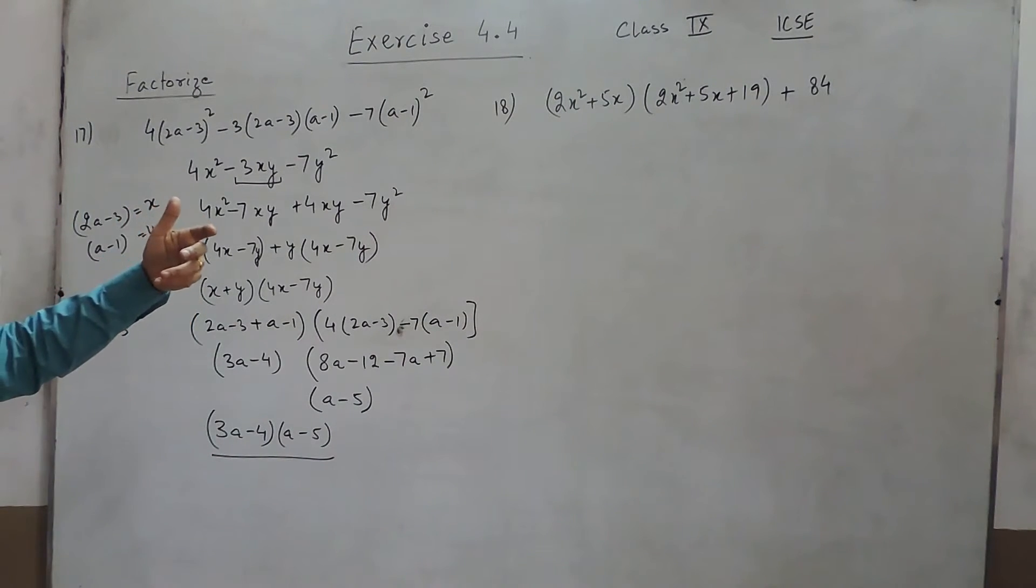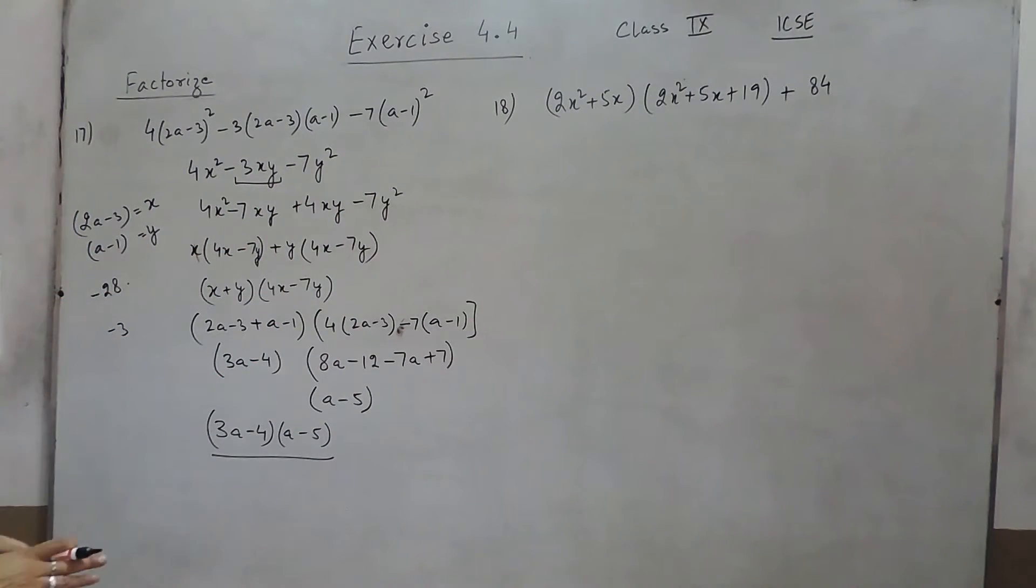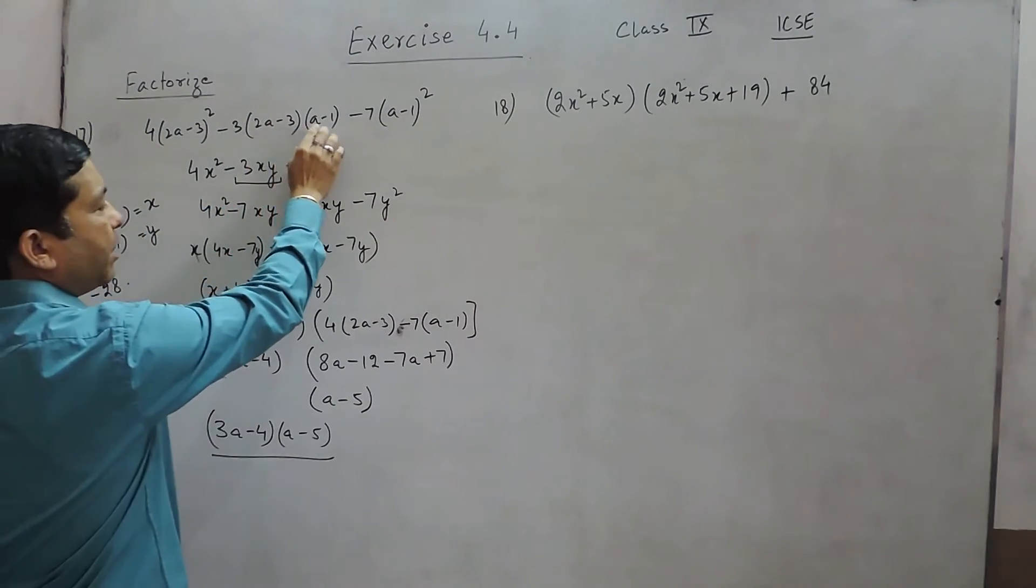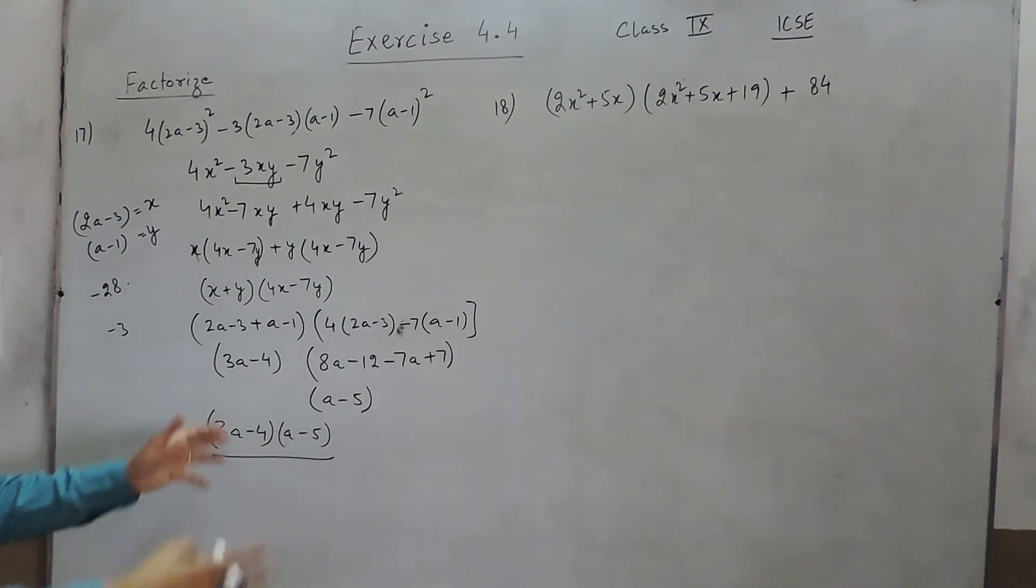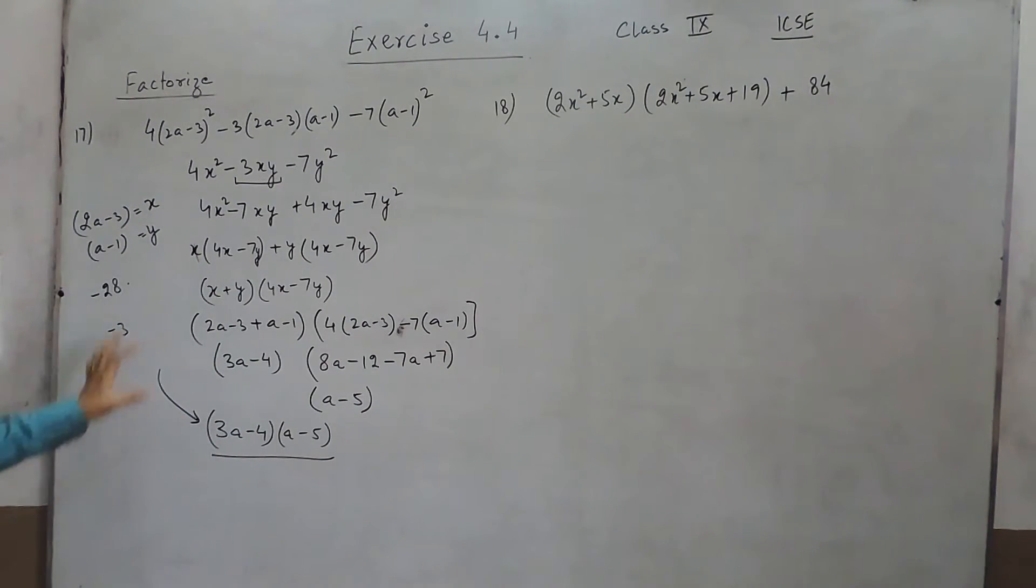I already told you that this can also be solved in another way. And that way is if I solve (2a - 3)² multiply by (a - 1) and (a - 1)² and then to factorize, then also we will get the same answer. But that will be a difficult method to solve.